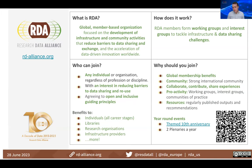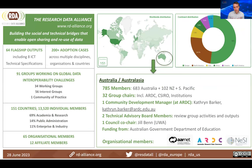The Research Data Alliance is a global member organisation — any individual can join and register. RDA has had 64 flagship outputs, including eight ICT technical specifications, coming from working groups addressing particular issues within research data and making it FAIR and shareable. That has led to 64 flagship outputs with over 200 adaptation cases across multiple disciplines.